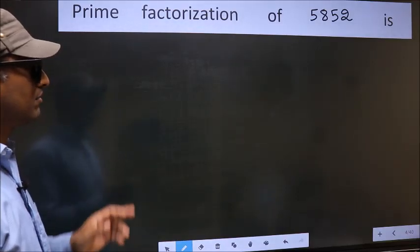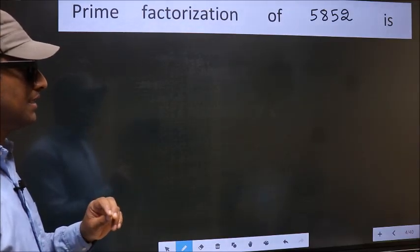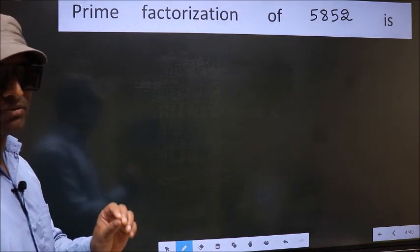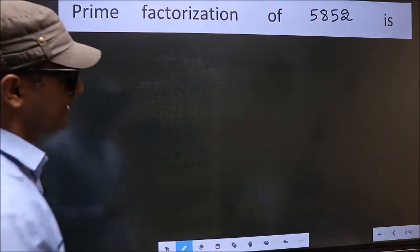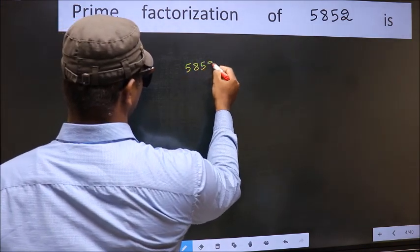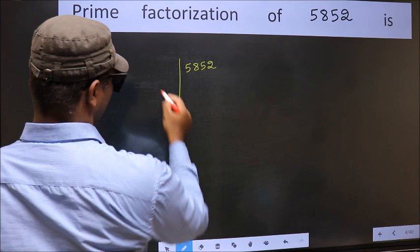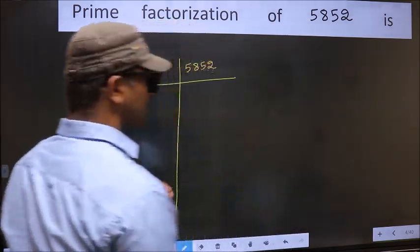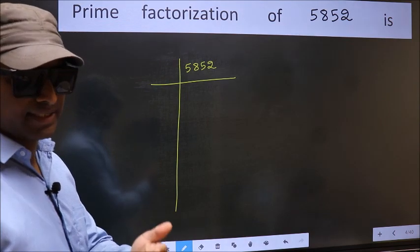Prime factorization of 5852. To do prime factorization, first we should frame it in this way. 5852. This is your step 1. Next.